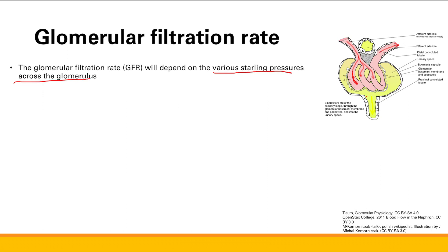Higher hydrostatic pressure in the capillary will cause fluid to filter through. Proteins, which influence oncotic pressure, will cause fluid to come in the other direction, decreasing filtration if you have extra proteins in your plasma. And if you have high hydrostatic pressure in Bowman's space, that's going to push fluid back and decrease filtration.